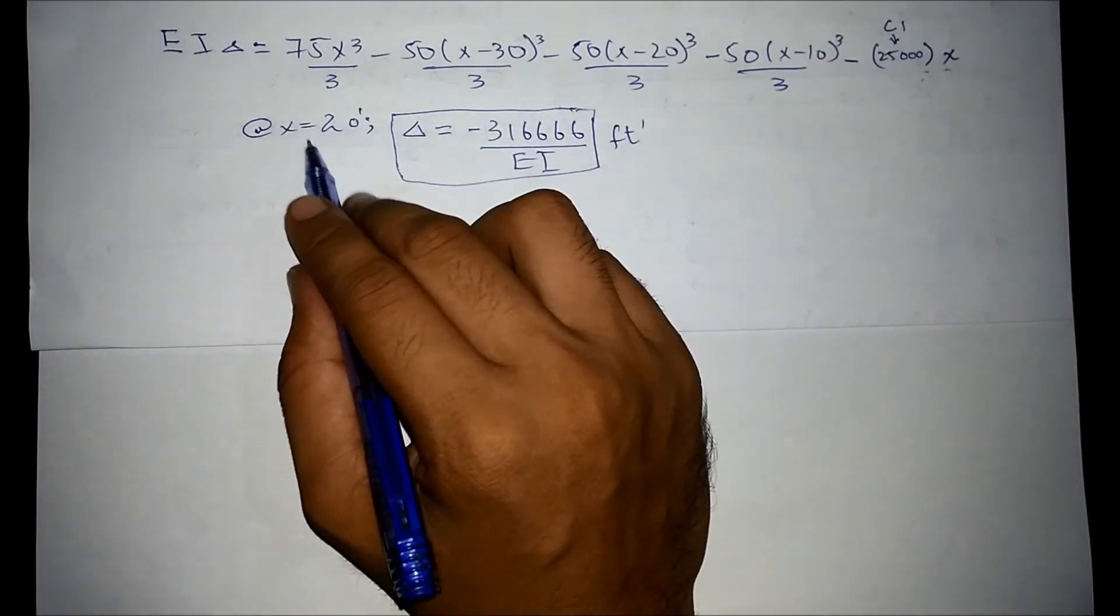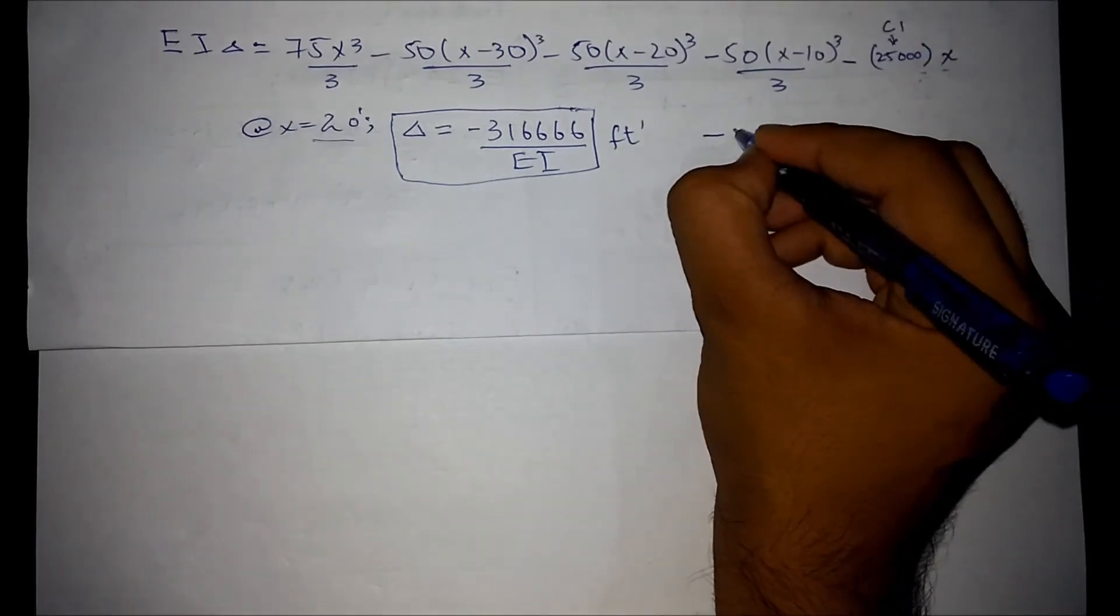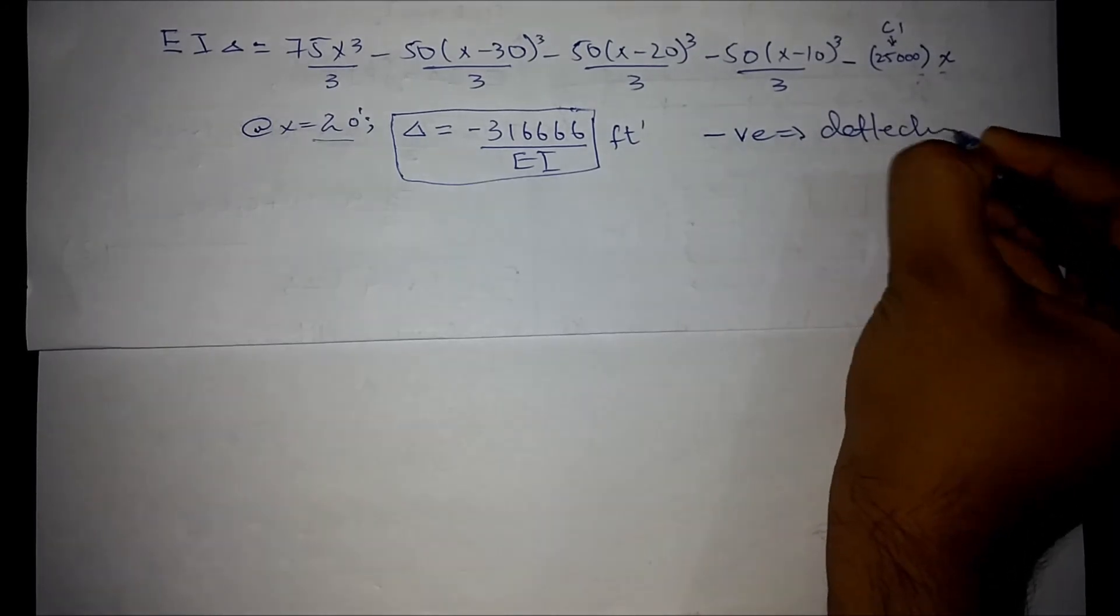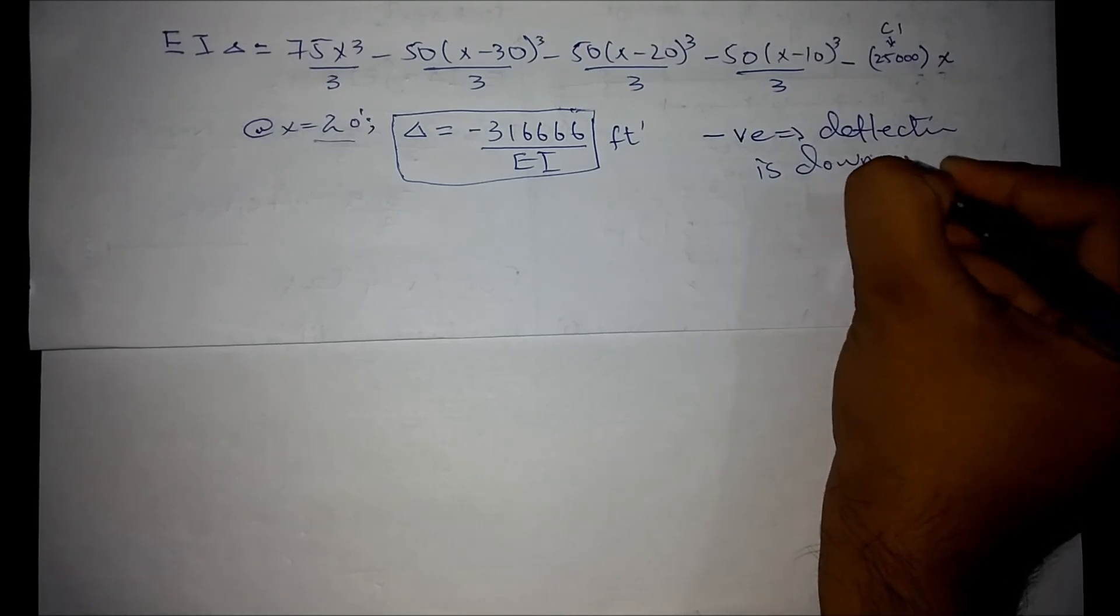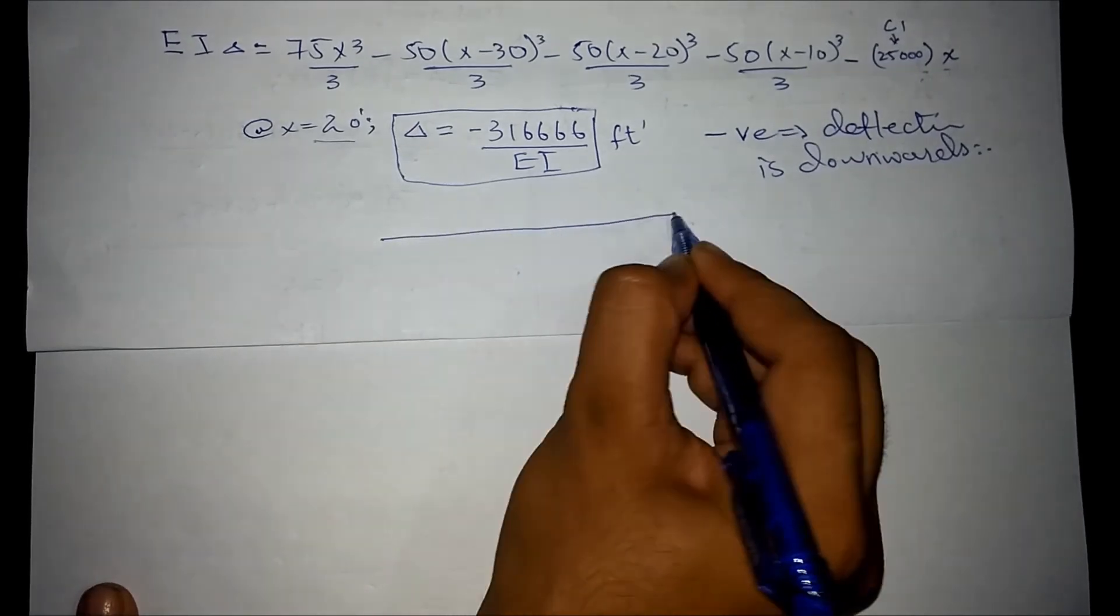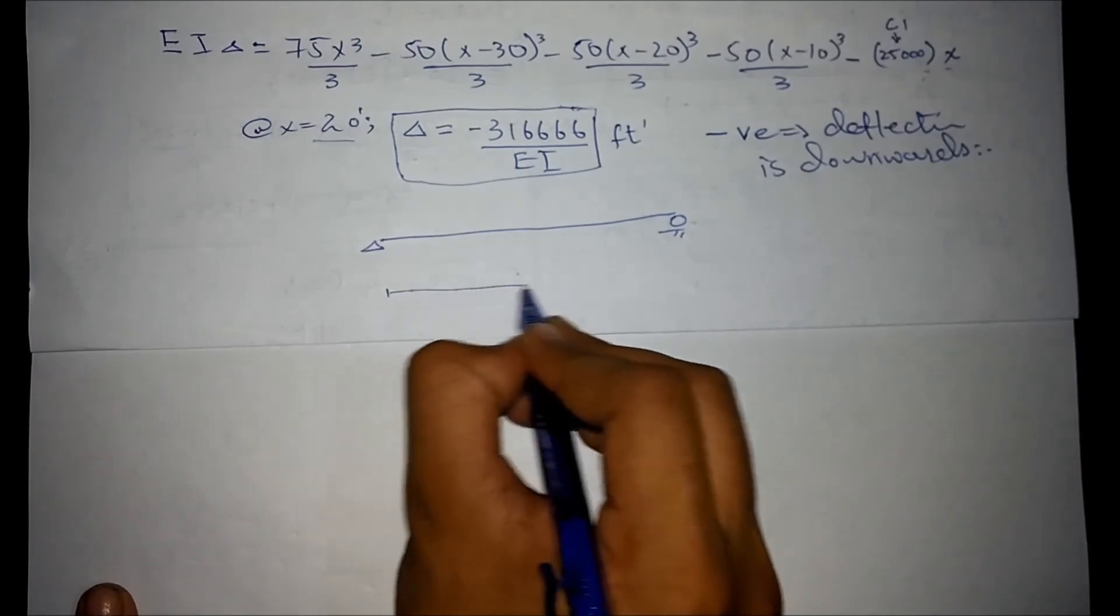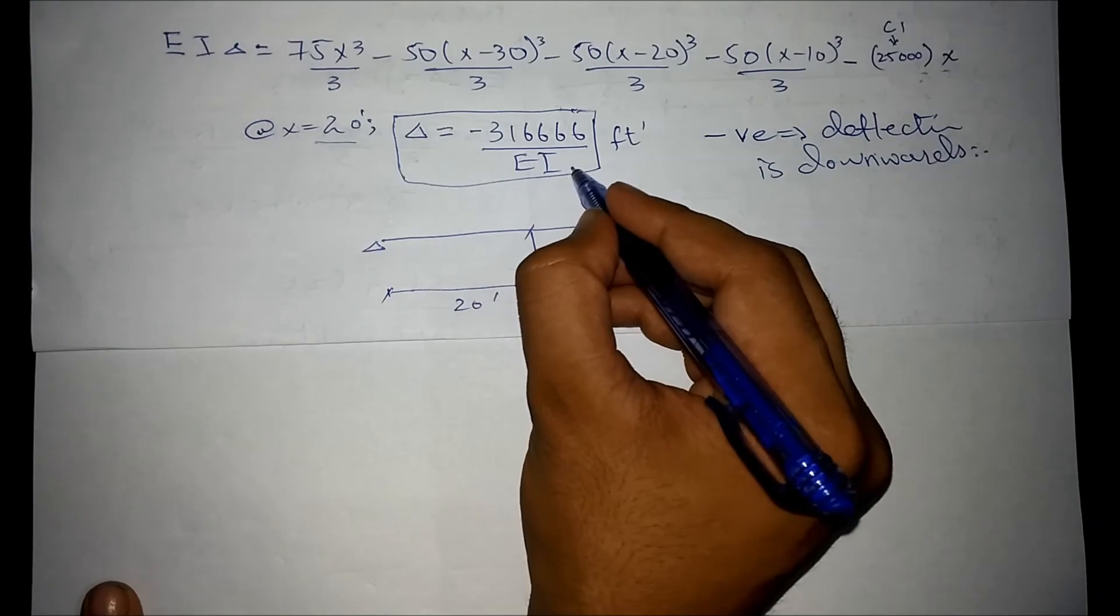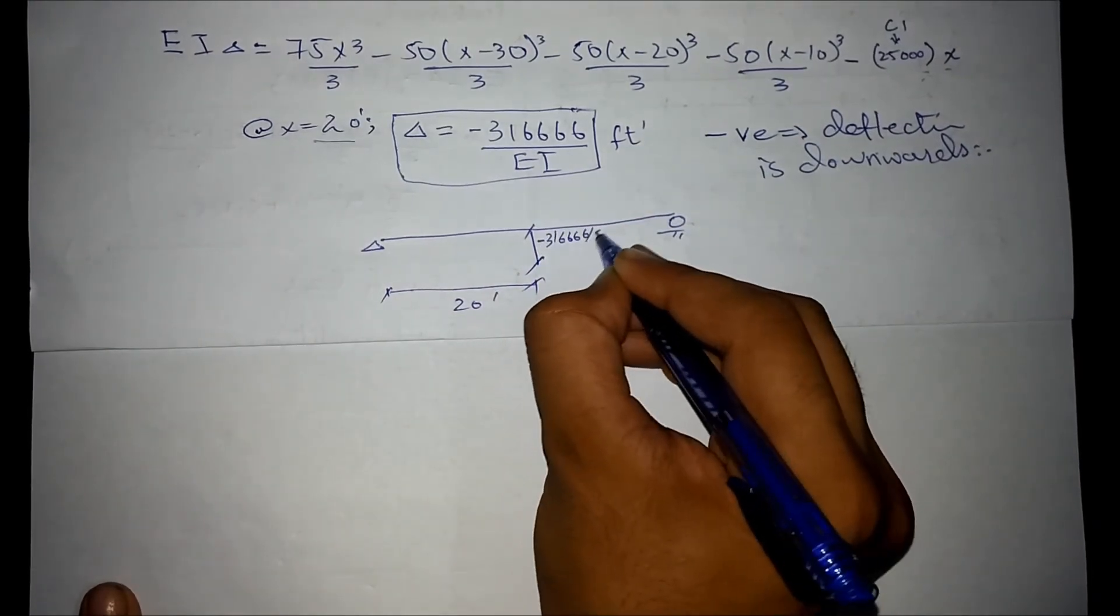Since we use the value of x in feet, this is very important point. And the minus sign indicates that the deflection is downward. For illustration and more clear understanding, you can always draw this at 20 feet. The required deflection is minus 316,666 over EI.